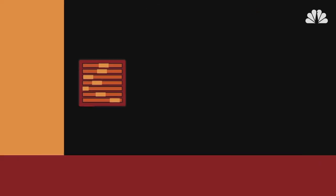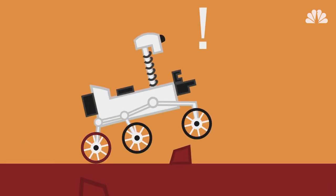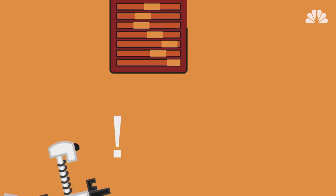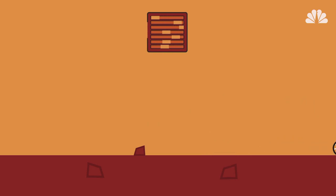This traction control algorithm also helps Curiosity avoid popping a wheelie, which can put too much pressure on the other wheels. When the algorithm detects a wheelie, it works to adjust the speed of the other wheels until the wheel in the air slowly moves back down to the ground.